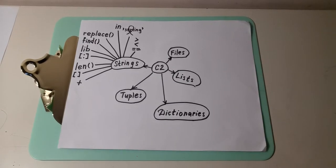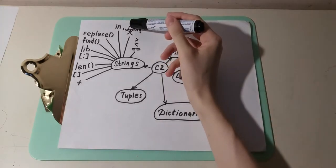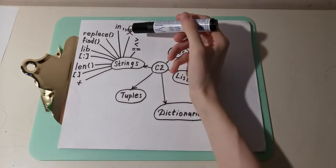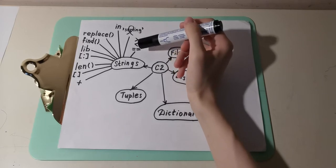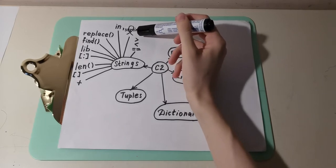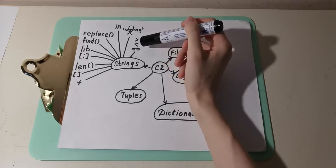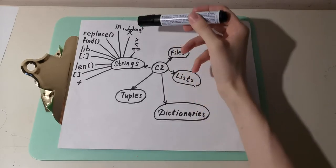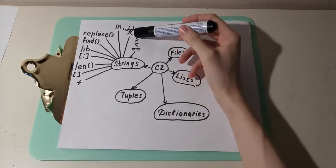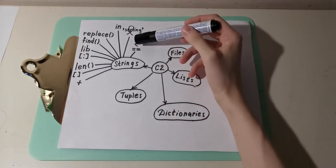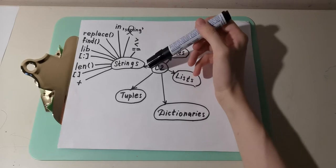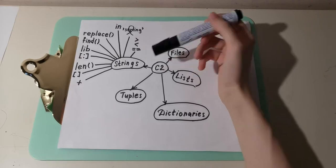In the previous video of this course we were talking about looping through strings. Now we talk about something, some topic where we use comparison signs — greater than sign, less than sign, and equal sign. Now we talk about string comparison.